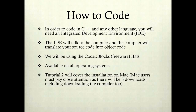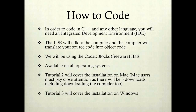The next tutorial, Tutorial 2, will cover the installation on Mac. Mac users must pay close attention as there will be three downloads in order to start coding in C++, including downloading the compiler and the C++ libraries. Tutorial 3 will cover the installation on a Windows machine — there is only one big install but everything is grouped. Depending on whether you are Mac or Windows, you can skip over Tutorial 2 or 3, or you can watch both.